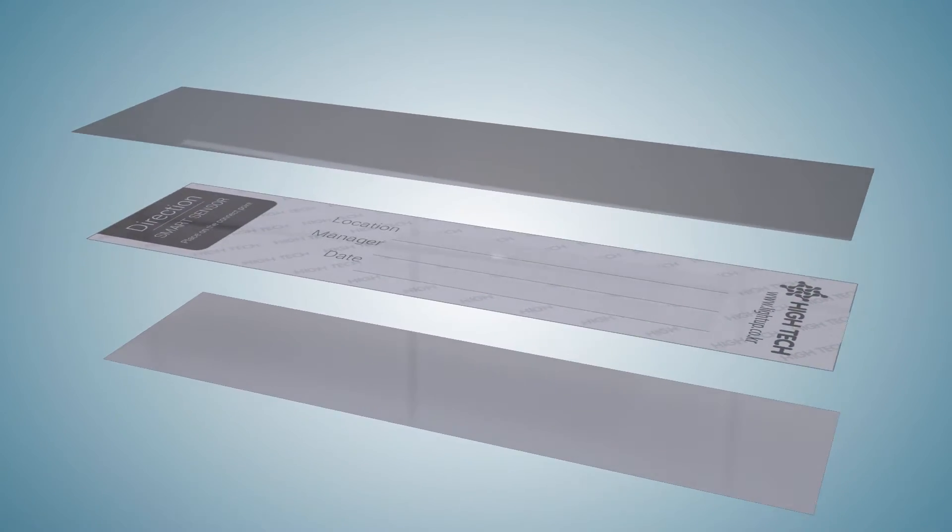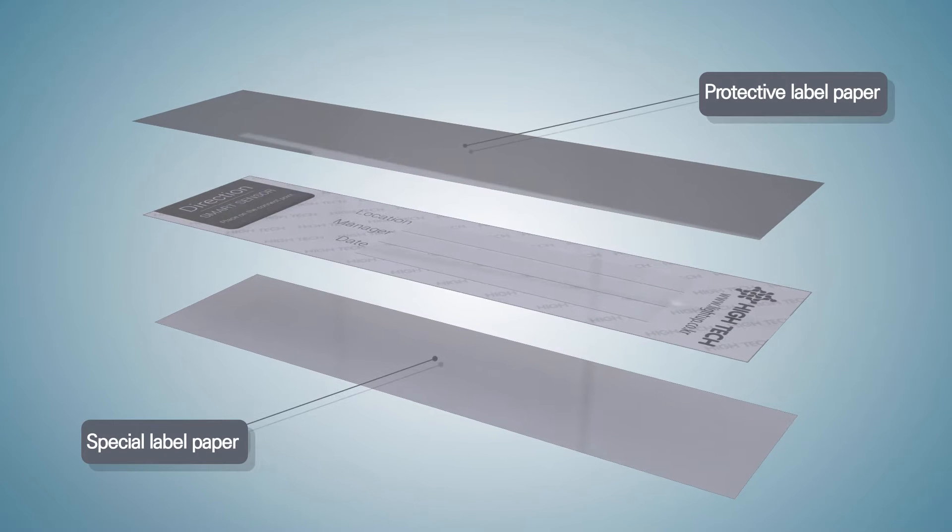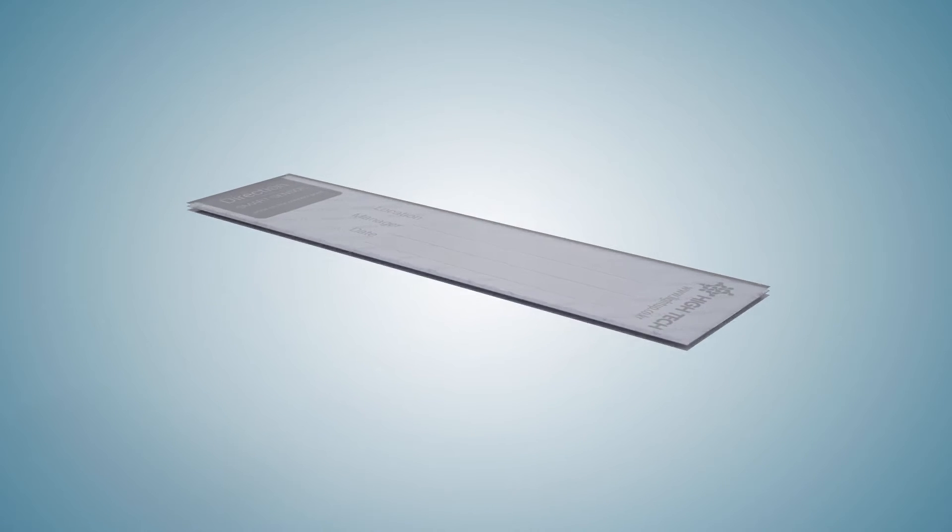Smart IoT Sensor consists of a sticker sensor composed of multi-layers including special labels and protective label and a communicating sensor.